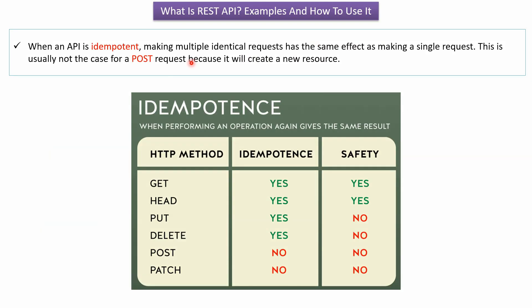When an API is idempotent, making multiple identical requests has the same effect as making a single request. This is usually not the case for POST requests, because a POST request will create a new resource each time. Idempotence means performing an operation again gives the same result. HTTP methods GET, HEAD, PUT, and DELETE are idempotent. HTTP methods POST and PATCH are not idempotent. Regarding safety: GET and HEAD are safe methods, while PUT, DELETE, POST, and PATCH are not safe.